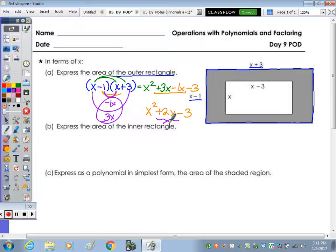Express the area of the inner rectangle. So that would be this rectangle here, whose dimensions are x by x minus 3. So multiplying x times x minus 3, we get x squared minus 3x.